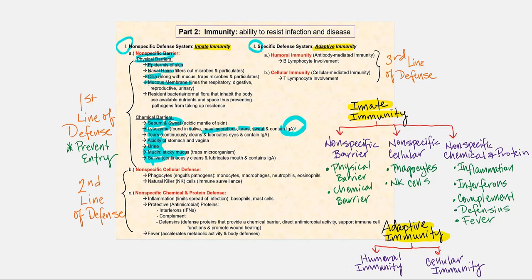Saliva also contains lysozyme and IgA. Looking at the various bodily fluids, a number of them contain lysozyme and IgA: saliva, nasal secretions like mucus, tears, and sweat. Let's now look at our second line of defense.